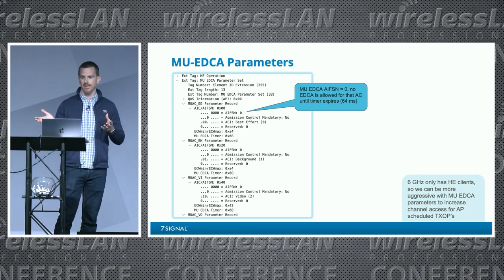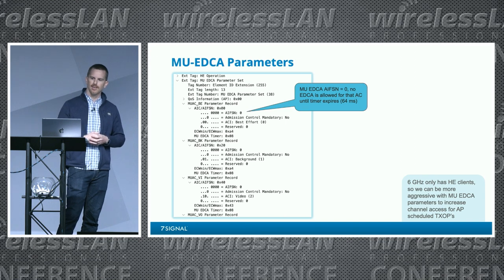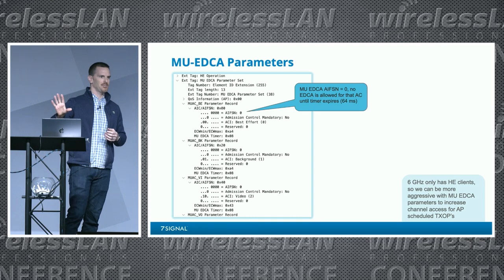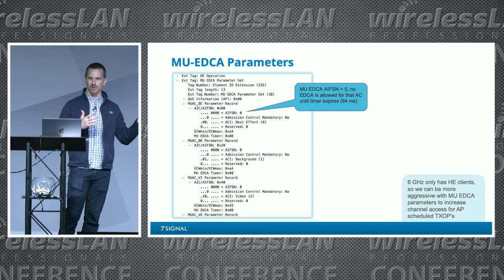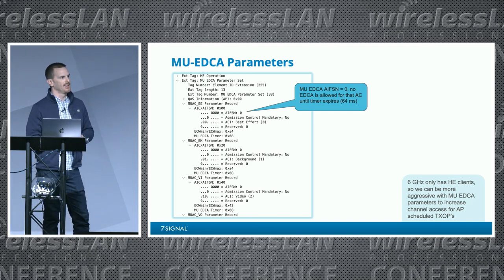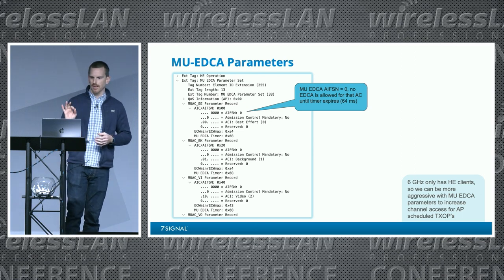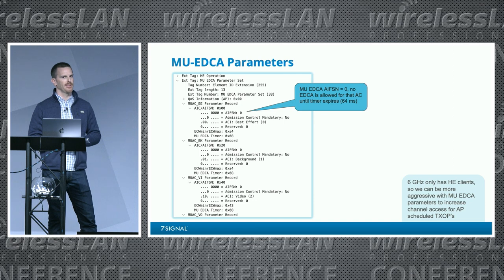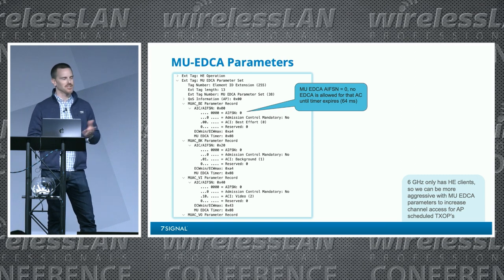In 6 GHz this is pretty neat, but in 2.4 and 5 GHz it's a mixed bag because you still have legacy PHYs - clients that are 802.11n and previous don't play by these rules, so you would disadvantage the 802.11ax clients but not the older PHYs. Also, 802.11ax clients can opt out of multi-user EDCA with an operating mode indication frame, but the AP has to allow them to send that frame.